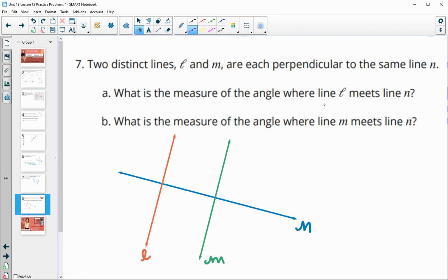Then let's take a look. So what is the measure of the angle where L meets N? So this angle here is 90 degrees since it said perpendicular. What is the measure of the angle where M and N meet? So M and N meet. They also meet at a 90 degree angle.